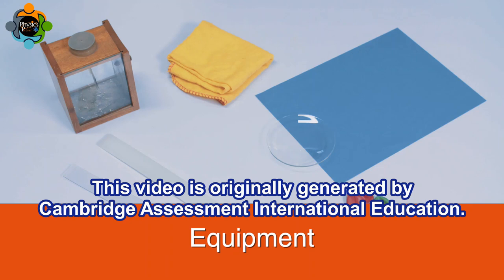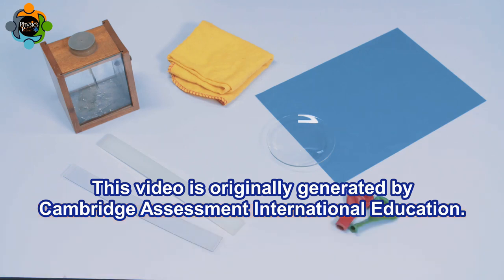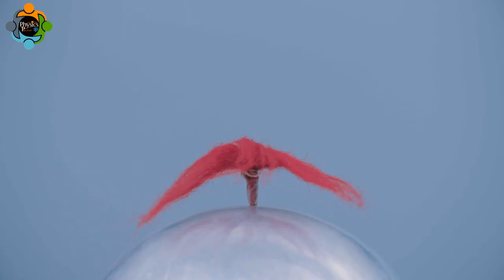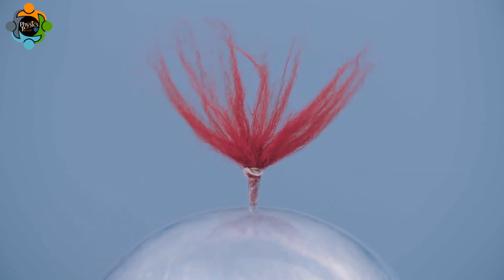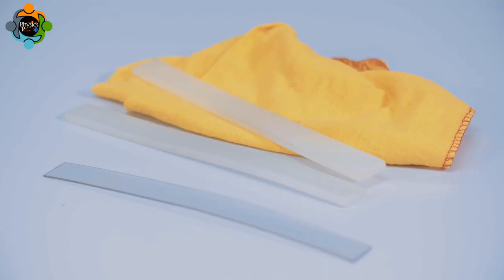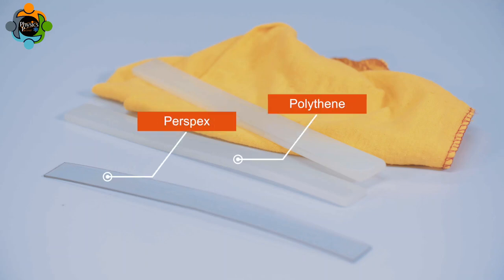This video is originally generated by Cambridge Assessment International Education. A Wimshurst generator accumulates charge. This can be explained using an understanding of electrostatic charge. Electrostatic charge can be produced and detected using insulators such as polythene and perspex.